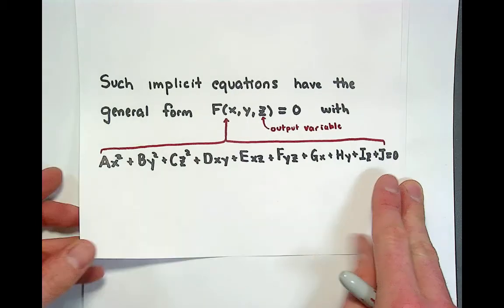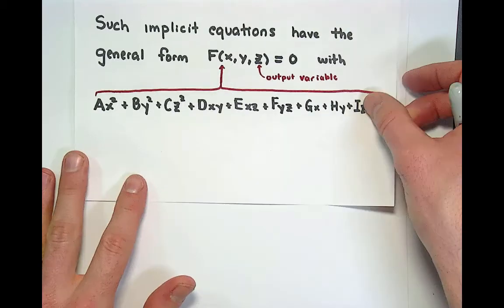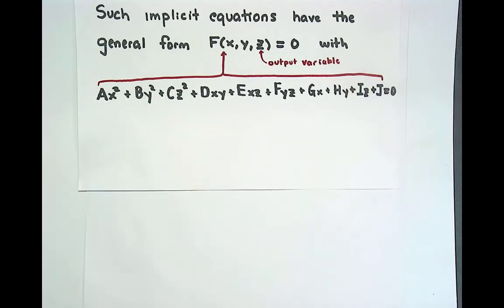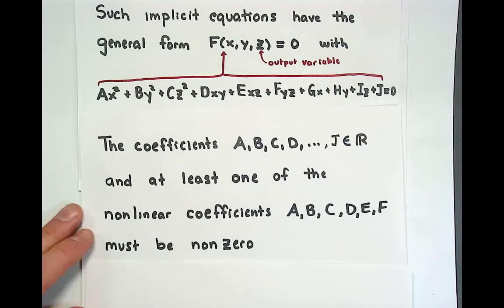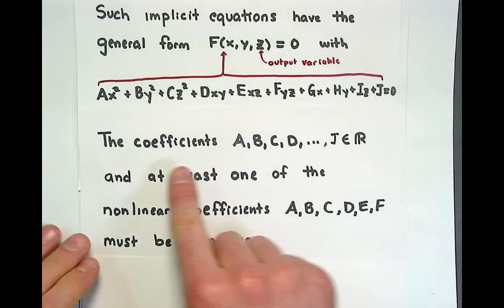This is the general form of a quadratic equation. When we look at that equation I perhaps should keep this up here just so we can look back at it as we talk about some of the specifics. There are some assumptions that we're going to make to force this to be a quadratic equation in three variables or a quadratic surface.